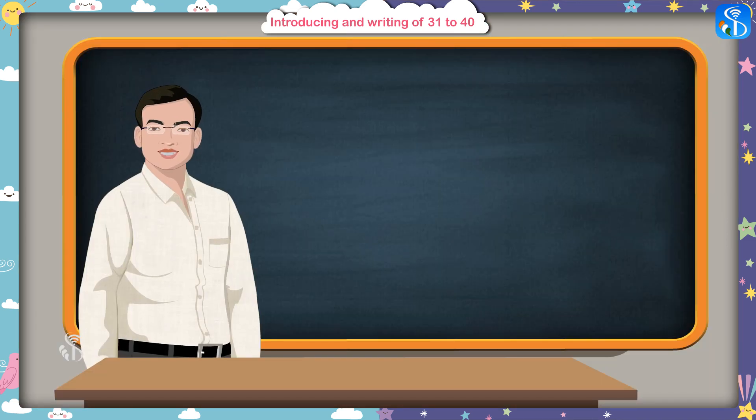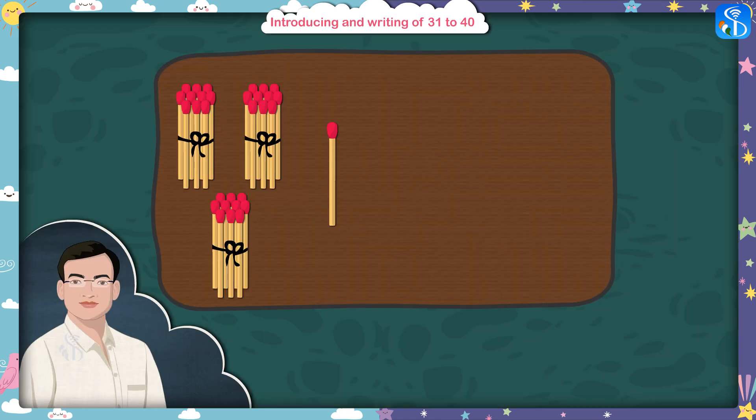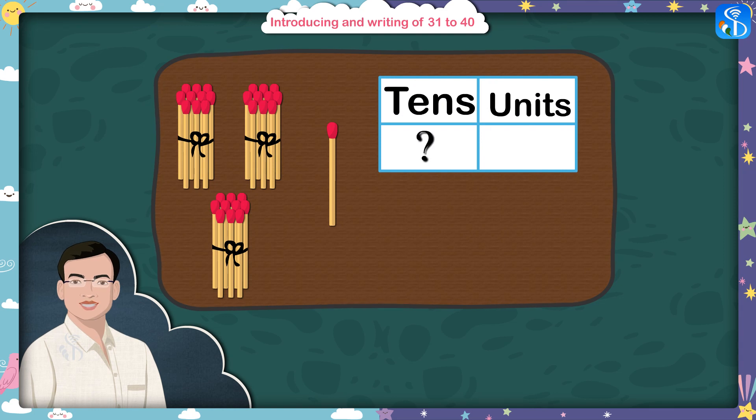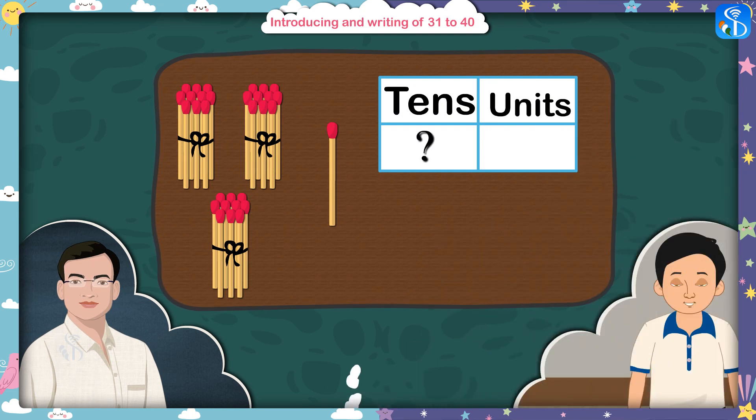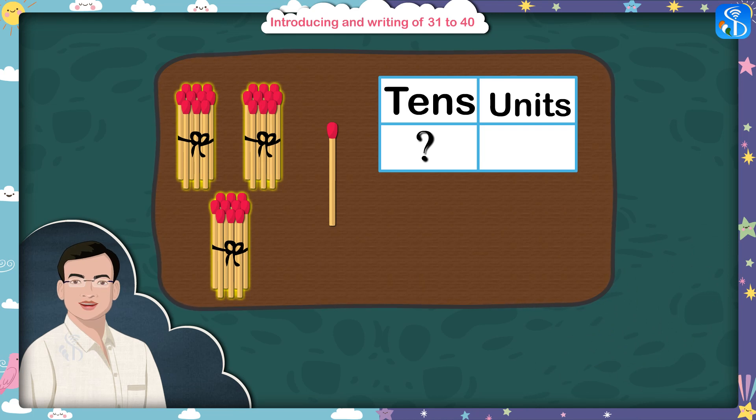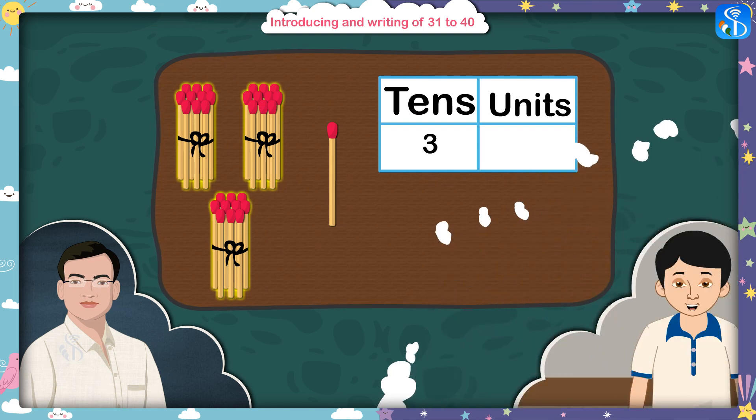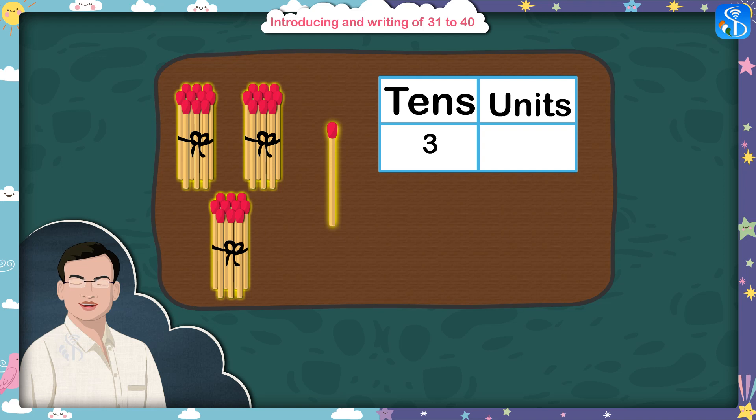Very good. We have learnt how to write the tens. Now tell me, how many tens or bundles are there in thirty-one? Sir, there are three bundles. Correct. So I will write three in tens place. How many units or single sticks are there? Sir, single stick is only one.